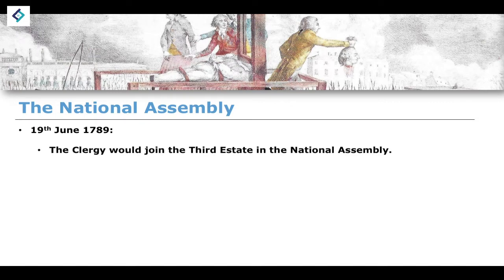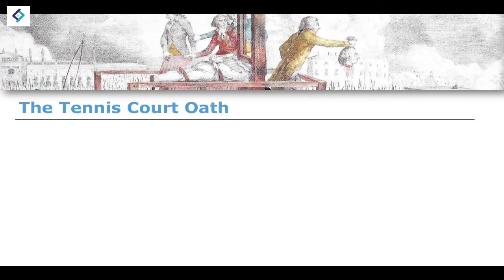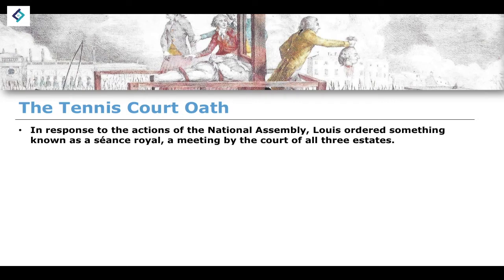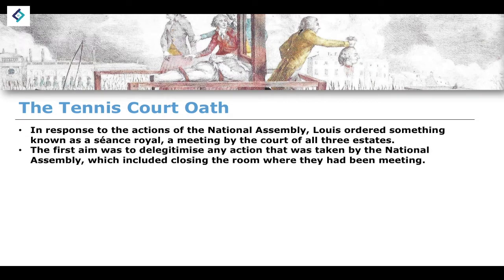A few days later, on the 19th of June 1789, the clergy joined the Third Estate in the creation of a National Assembly. In response to this, Louis ordered a séance royale — a meeting by the courts of all three estates — essentially aiming to delegitimize any action taken by this new National Assembly. One of the things they did was simply close and lock the room where the National Assembly had been meeting, preventing them from convening there.